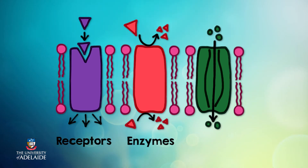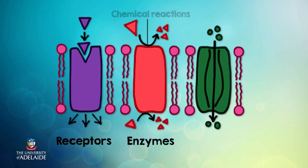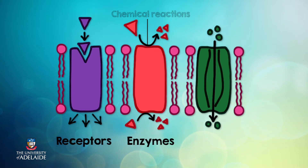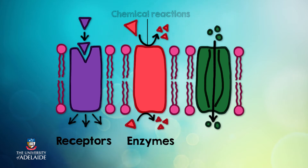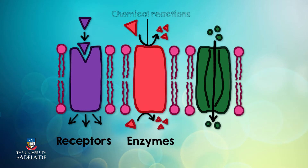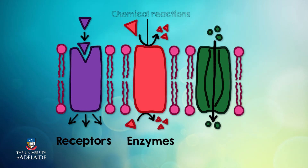Enzymes are proteins that increase the rate of chemical reactions on either the outer or inner surface of the plasma membrane. For example, enzymes in cells lining the small intestine increase the rate of breakdown of carbohydrates and proteins so that they can be easily absorbed.